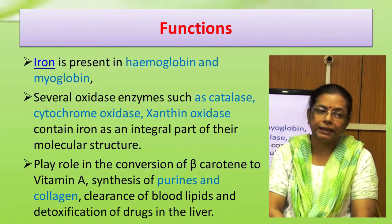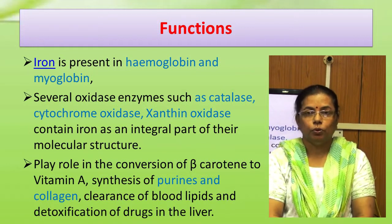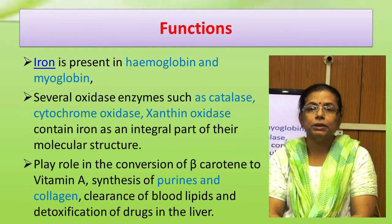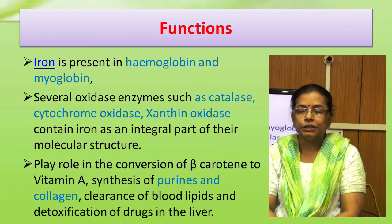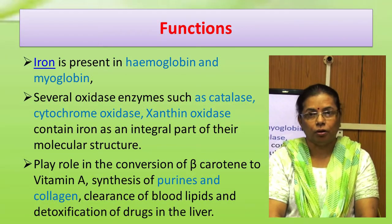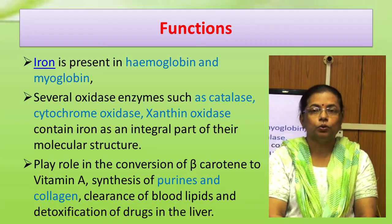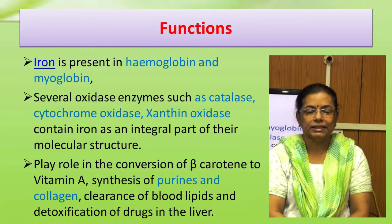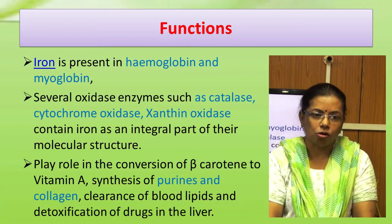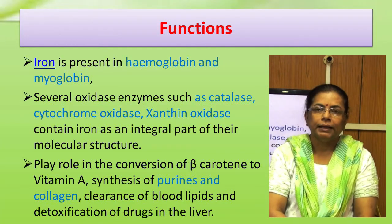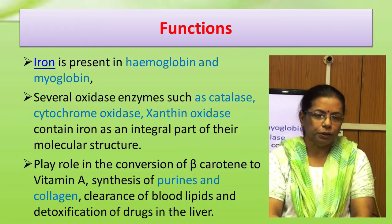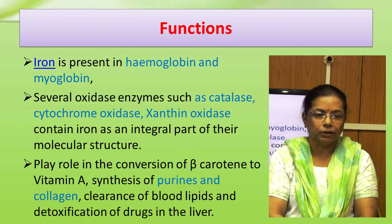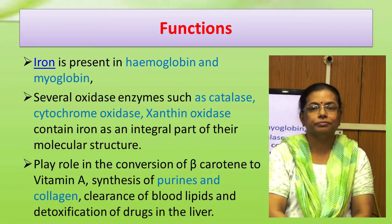Functions of iron: Iron is present in hemoglobin and myoglobin. As a constituent of hemoglobin, it helps in transport of oxygen from the lungs to the tissues and returns CO2 from the tissues to the lungs. Myoglobin is a protein-iron complex found in muscles and acts as a reservoir of oxygen. Oxygen combines with nutrients to release energy which powers muscular contraction. Several oxidase enzymes such as catalase, cytochrome oxidase, and xanthine oxidase contain iron as an integral part of their molecular structure. They play a role in the conversion of beta-carotene to vitamin A, synthesis of purines (integral parts of DNA and RNA), collagen formation, clearance of blood lipids, and detoxification of drugs in the liver.